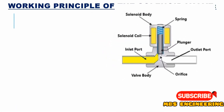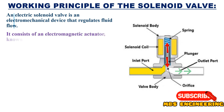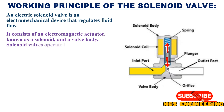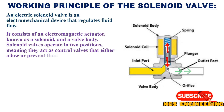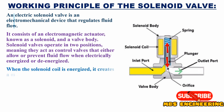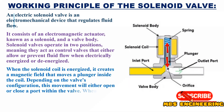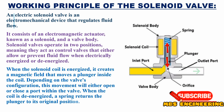Next, we will understand the working principle of the solenoid valve. An electric solenoid valve is an electromechanical device that regulates fluid flow. It consists of an electromagnetic actuator known as a solenoid and a valve body. Solenoid valves operate in two positions, acting as control valves that either allow or prevent fluid flow when electrically energized or de-energized. When the solenoid coil is energized, it creates a magnetic field that moves a plunger inside the coil. Depending on the valve's configuration, this movement will either open or close a port within the valve. When the coil is de-energized, a spring returns the plunger to its original position.